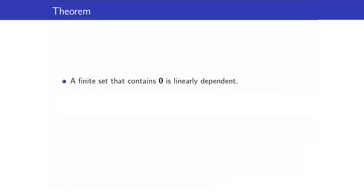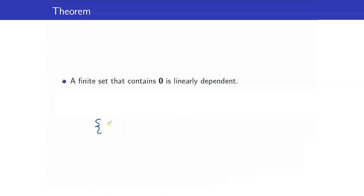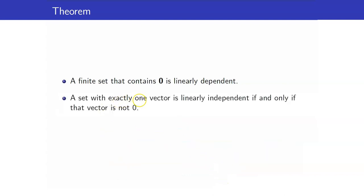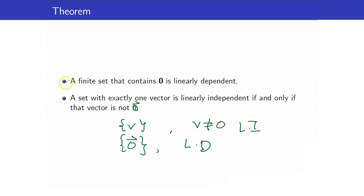Here is a theorem that tells us the linear independence of some special sets. First, a finite set that contains the zero vector is linearly dependent. Why is that? If you have a zero vector along with other vectors V1 up to Vn, you can form C times the zero vector plus 0 times V1 plus 0 times V2, and so on, where C is not equal to zero — this forms a non-trivial solution. Next, a set with exactly one vector is linearly independent if and only if that vector is not the zero vector. If V is not equal to zero and you just have one element, then the set is linearly independent. But if the single element is the zero vector, then this is linearly dependent.